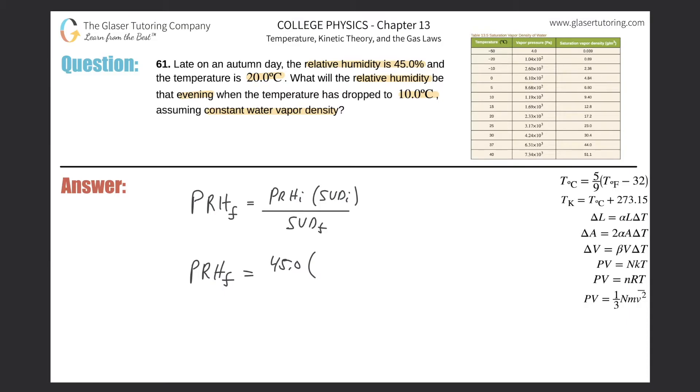The saturation vapor density initially. So what we have to do is we have to look up the temperature. The temperature initially is 20 degrees Celsius. You go to your table, 20 degrees Celsius, and you look up that saturation vapor density. So that will be now 17.2 grams per cubic meter.